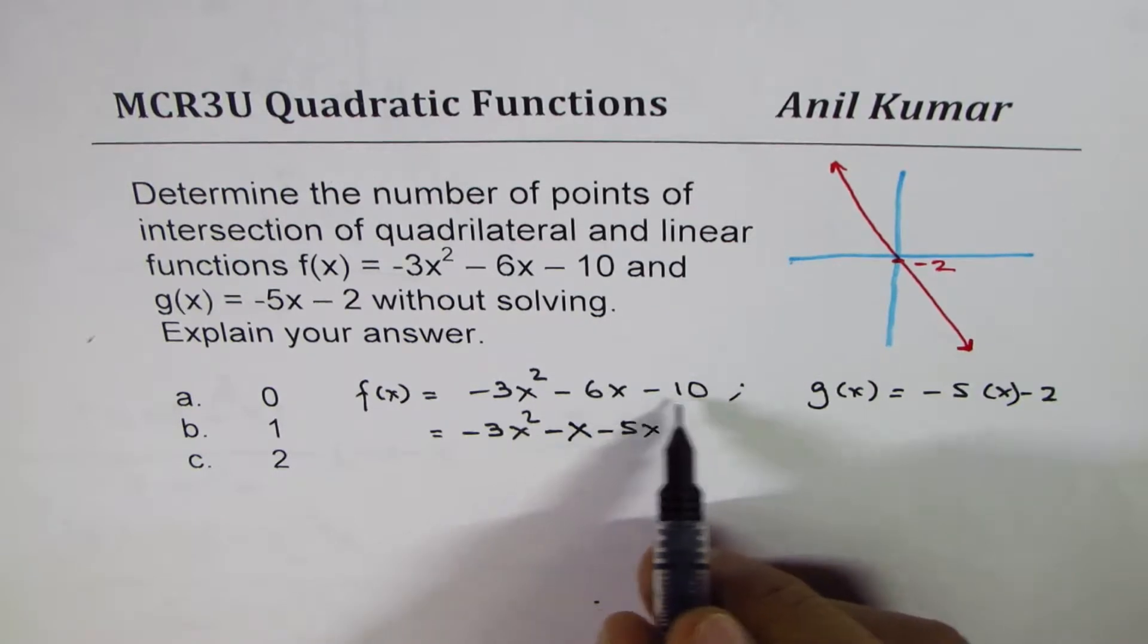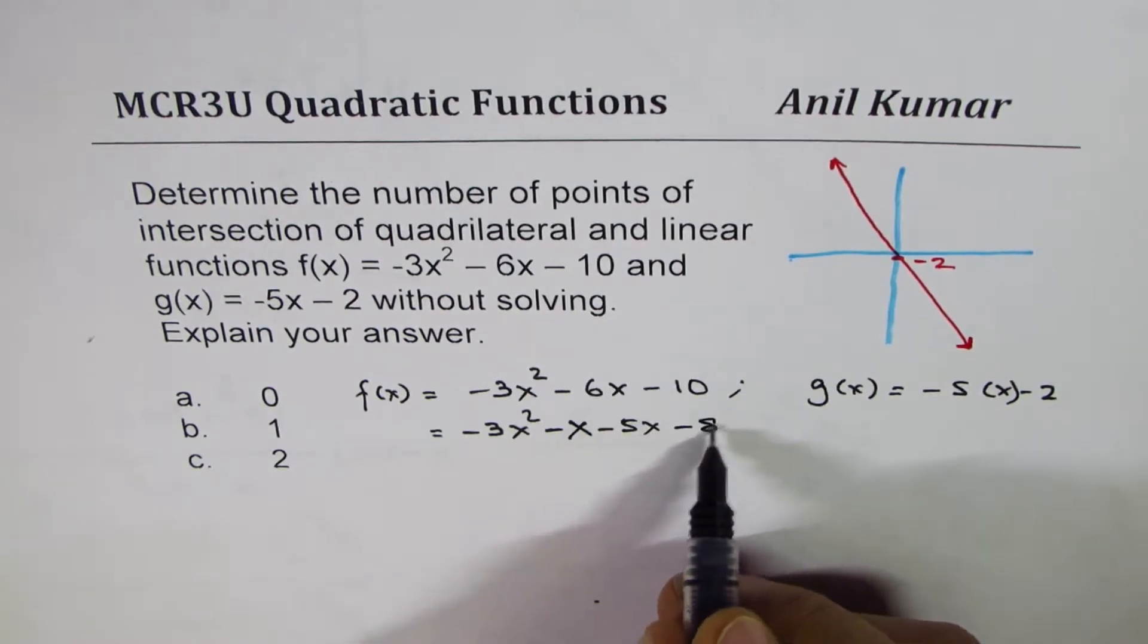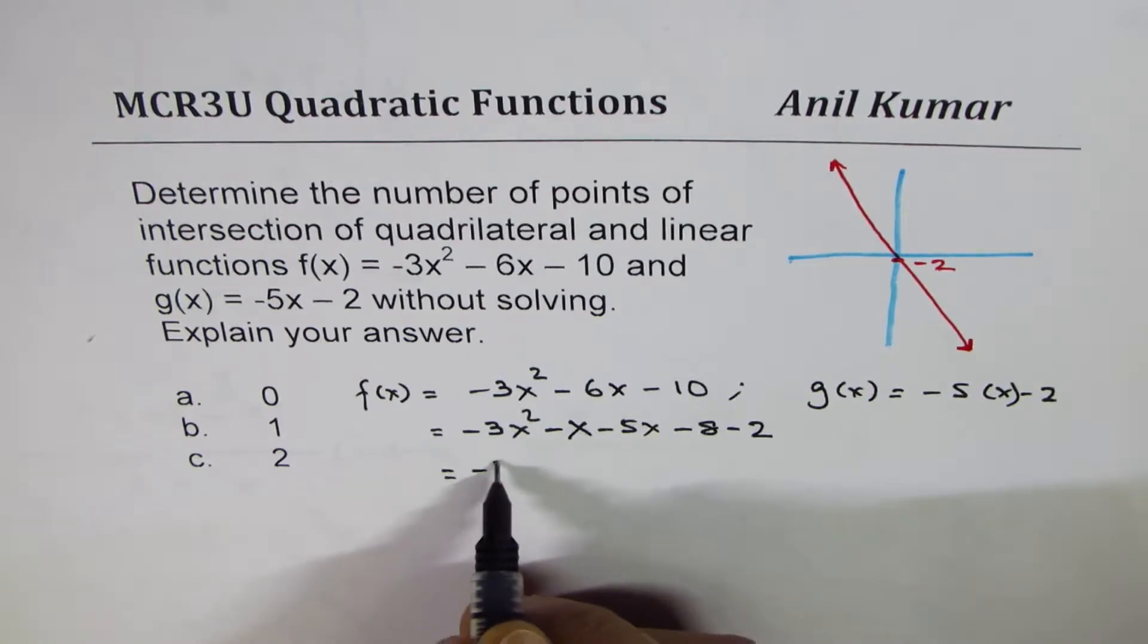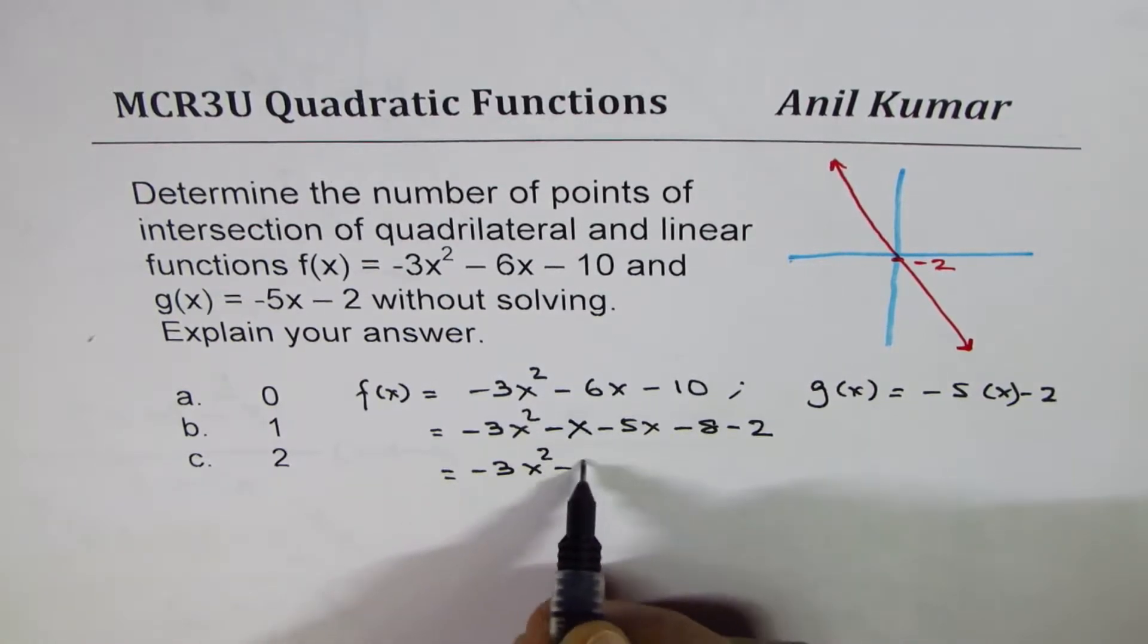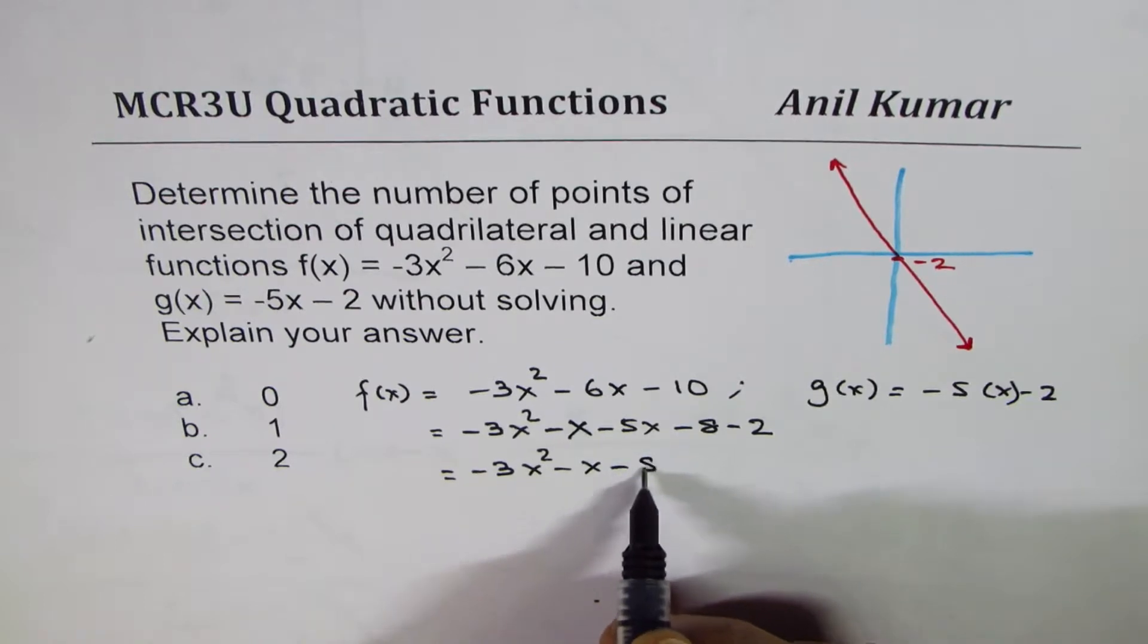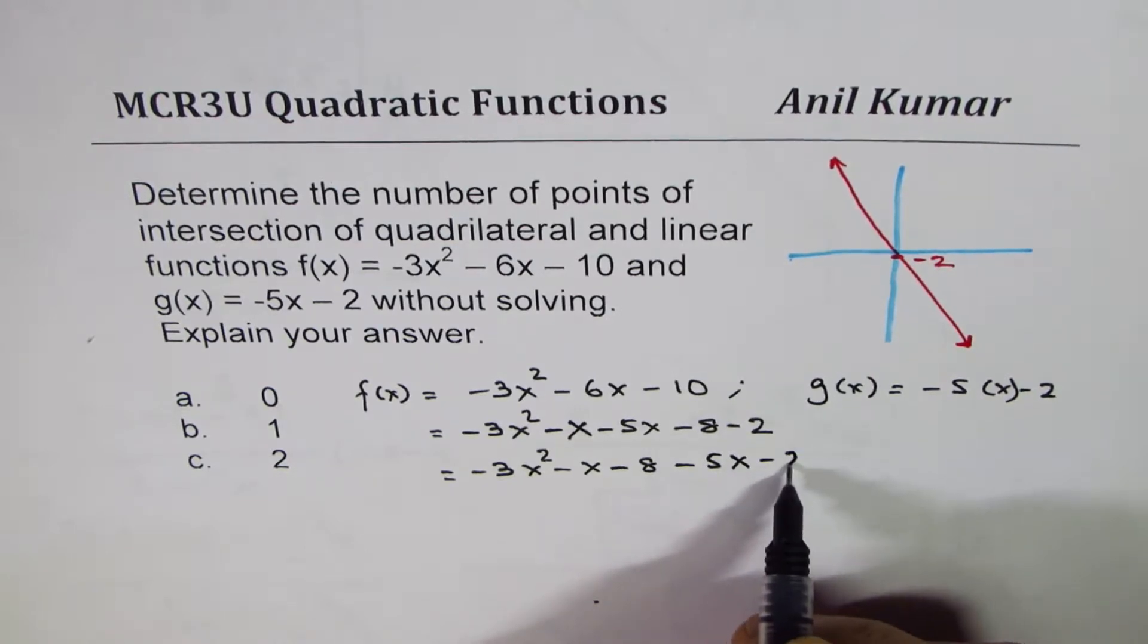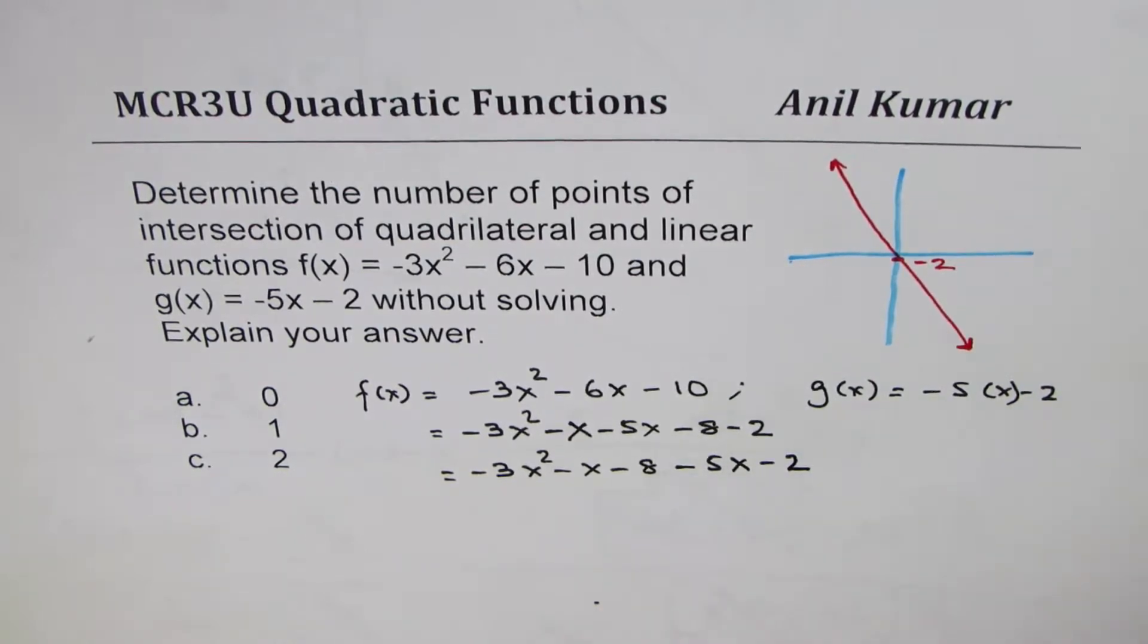And then I'll rewrite this equation as -3x² - x - 8, and on this side -5x - 2. So you see this part of this function is kind of like this.